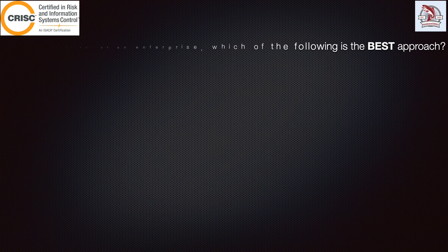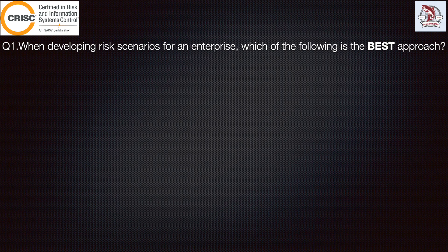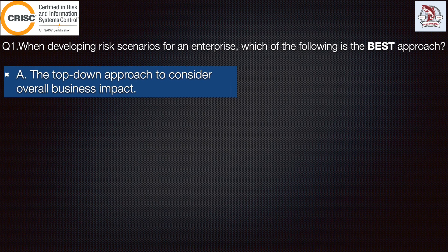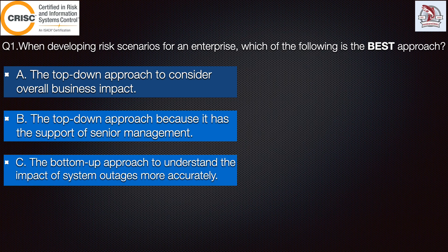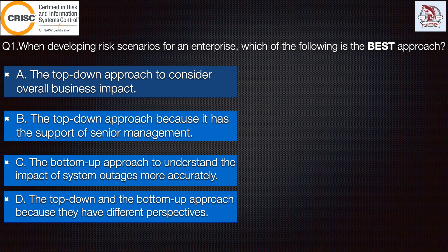The first question states: when developing a risk scenario for an enterprise, which of the following is the best approach? Option A: the top-down approach to consider overall business impact. Option B: the top-down approach because it has the support of senior management. Option C: the bottom-up approach to understand the impact of system outages more accurately. And option D: the top-down and the bottom-up approach because they have different perspectives.